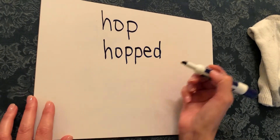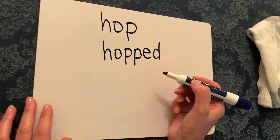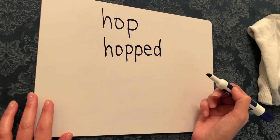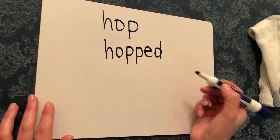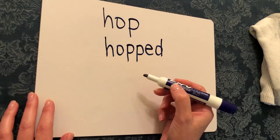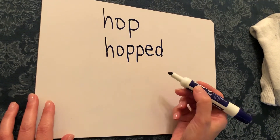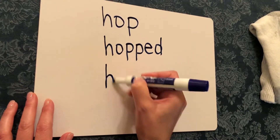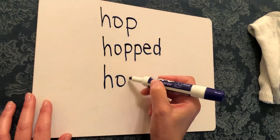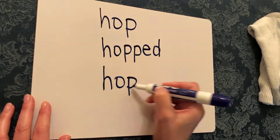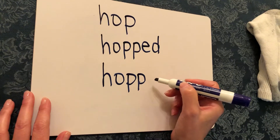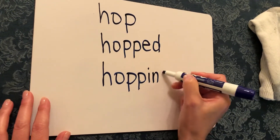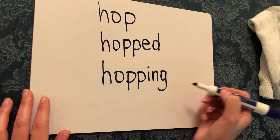Now let's try it again, but we're going to add the suffix ING. So again, we're going to double the consonant P and add the suffix ING. That makes the word hopping.